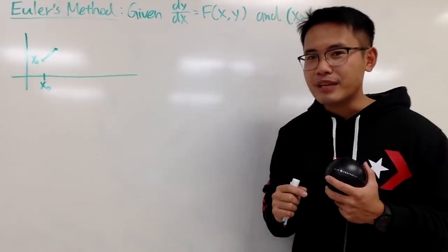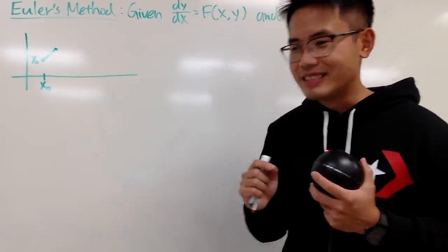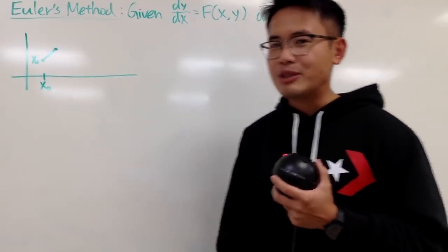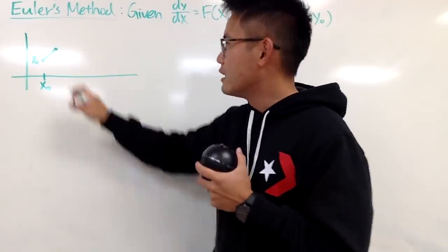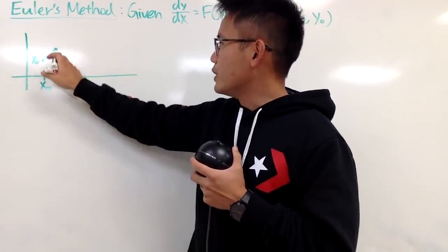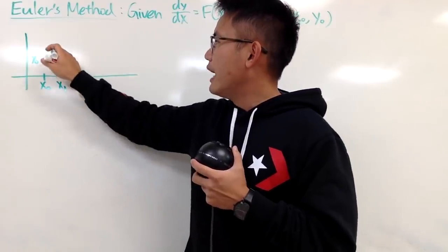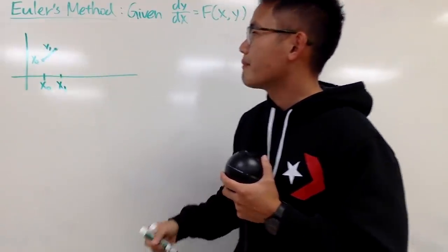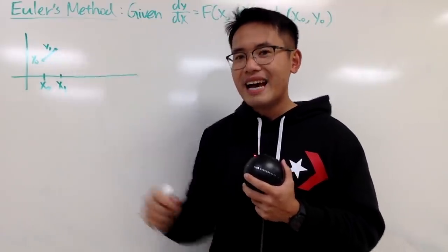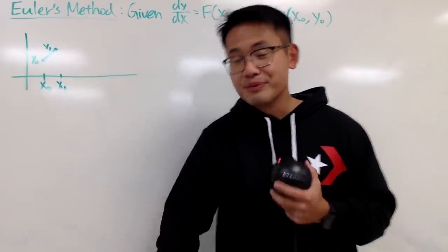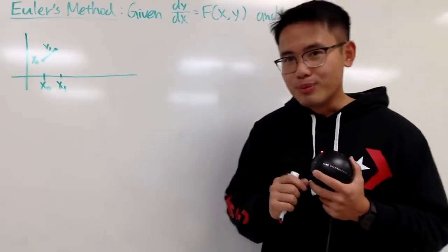It depends on the step size you take — of course the smaller the better; the smaller, the better the approximation will be. But I will draw it big so we can see it. Anyway, suppose we get to this point — I would call this x1 and this is y1. And now, this is pretty much two points and we have a line, so we can talk about the equation of a line. And we also have the slope.